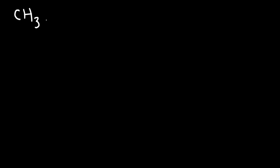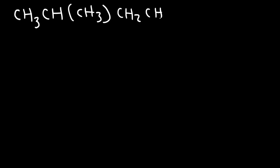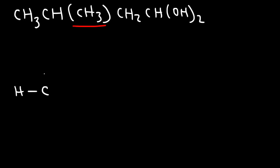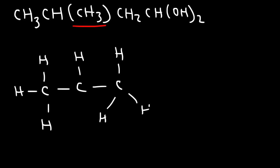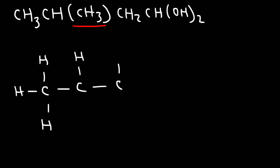Here's another example: CH3, CH, CH3, CH2, CH, OH times 2. It looks like we have a CH3 in the middle — so what should we do if we see that? Starting with the CH3 on the left, we have a carbon with three hydrogen atoms, and then a CH group — a carbon with a hydrogen. Now this CH3 group cannot be written inline and then have a CH2 attached next to it, because carbon can't have five bonds. That's why you can't put a CH3 group in the middle — we need to put it outside of the chain.